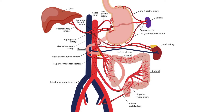Here is an image depicting the arterial supply of the GI structures, which can be found in your text in section 5 of the cardiovascular anatomy chapter. Here we can see the foregut labeled — it's everything above this line, and we can see that the celiac trunk is what supplies all of these structures. Next, look at the midgut. This is supplied by everything below this line and above this line, and this includes the colon up to the proximal two-thirds of the transverse colon.